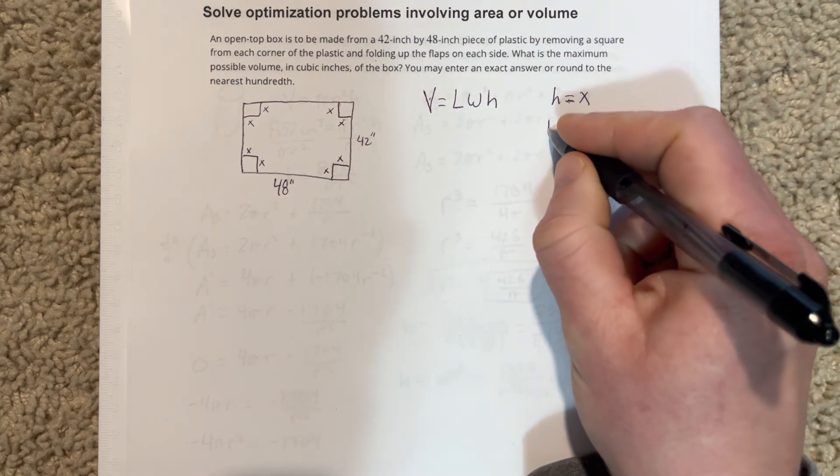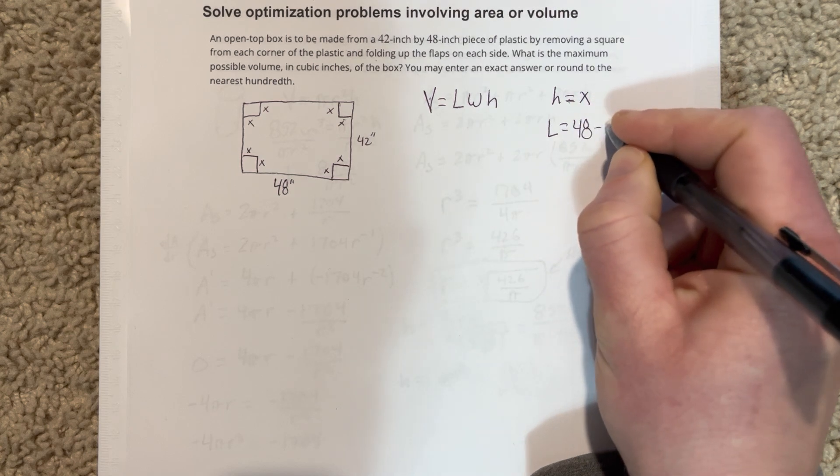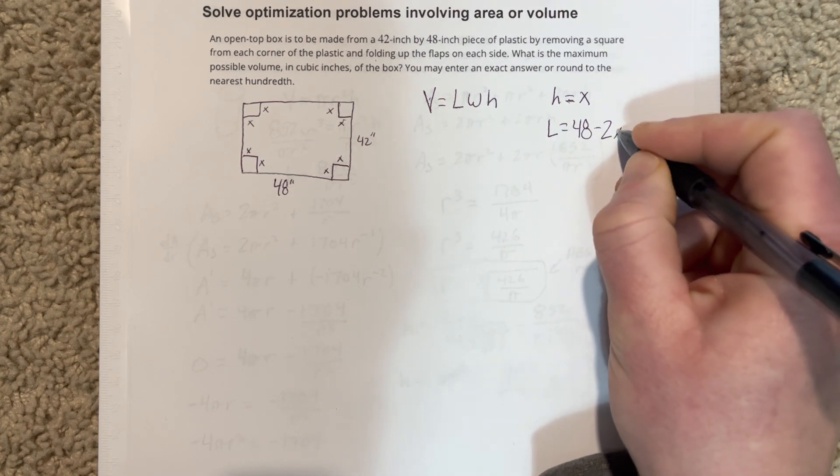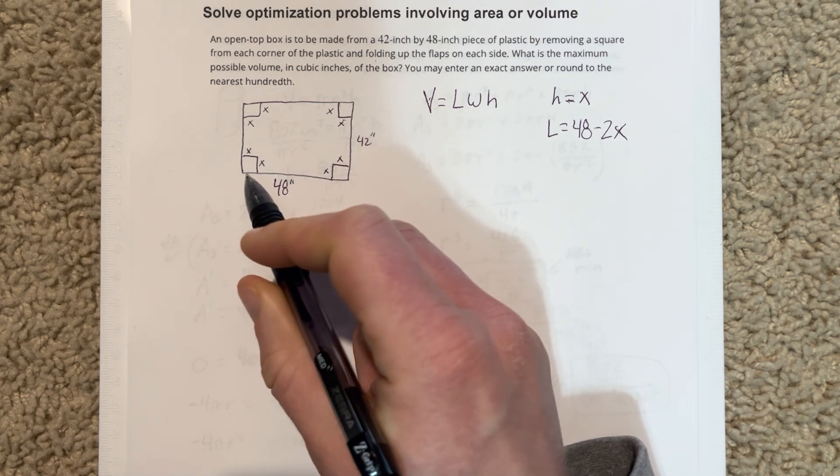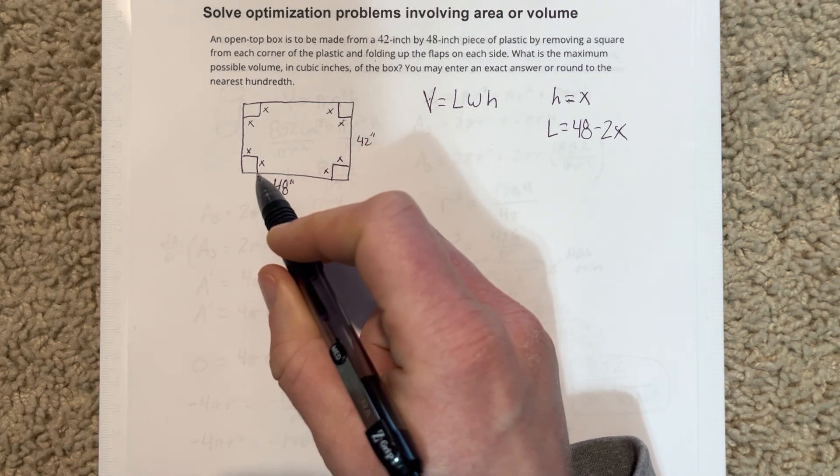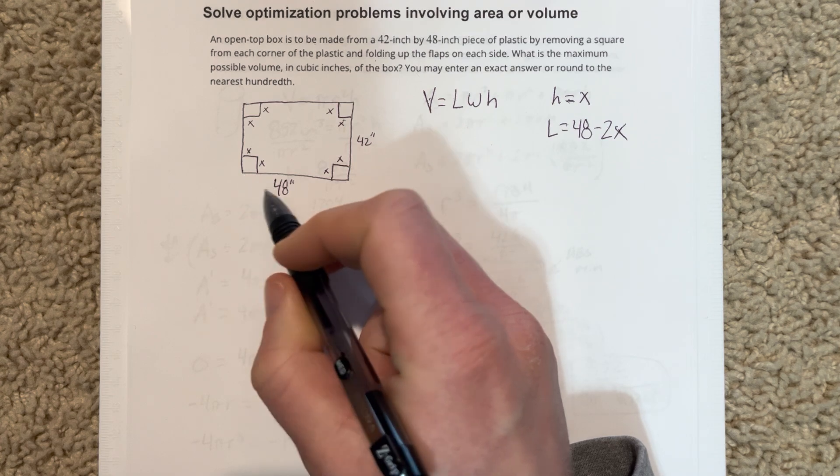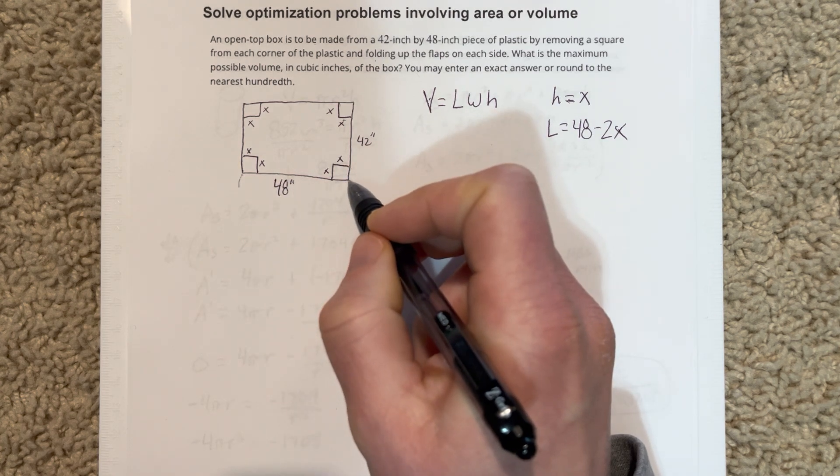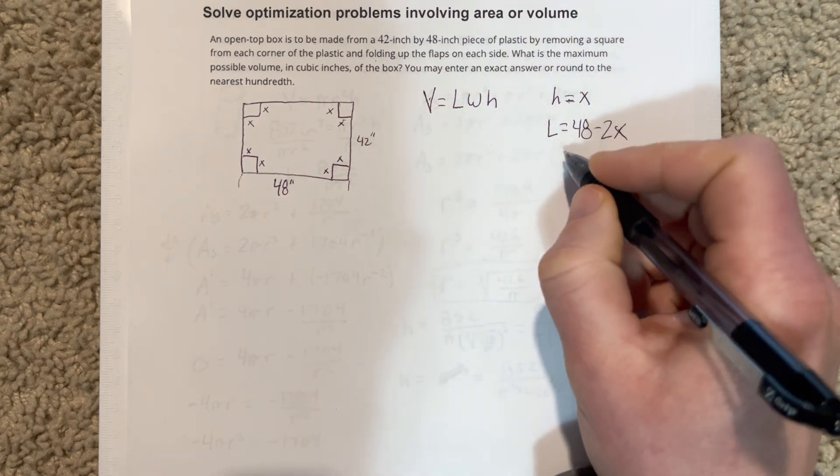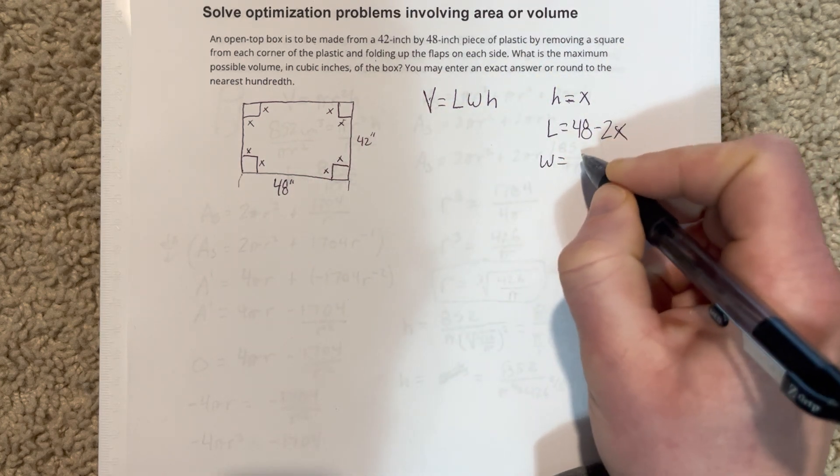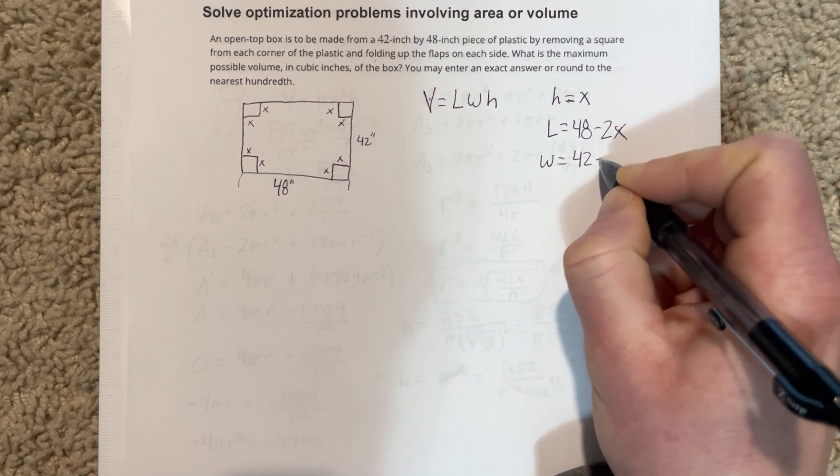Our length is going to be the length of the box once folded up, which would be 48 minus 2X. So we're going to say the L is equal to 48 inches minus 2X. You can see that here that you have this X value here and this X value here. When you fold it up, you're going to get basically 48 inches goes from here to here, so you're going to have to subtract out the 2X. And we'll do the same thing for the 42. So the width is 42 minus 2X.